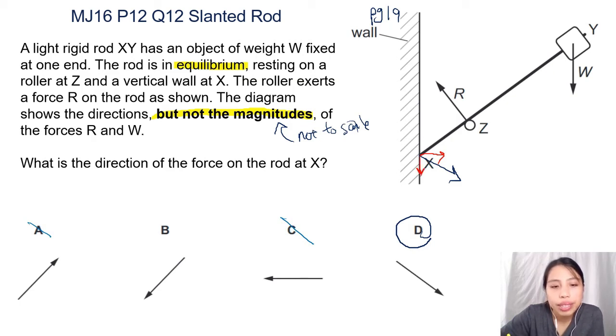So it cannot be B because B means you have something down - these are the components - and something left. Why would the wall exert a force leftwards? You're supposed to push out on the rod so it's to the right. So D is the best choice you can do in this case for the direction of the rod at X.